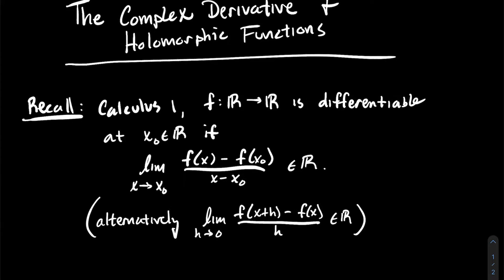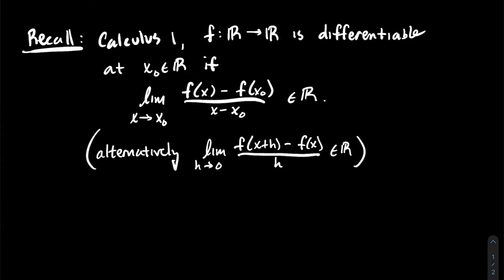Perhaps you've seen another definition of the derivative that uses the variable h: the limit as h goes to zero of f of x₀ plus h minus f of x₀, all divided by h. To say a function is differentiable at x₀, we require that limit to be a real number — it's got to exist.